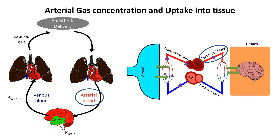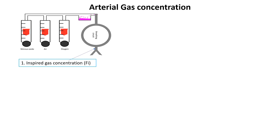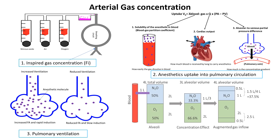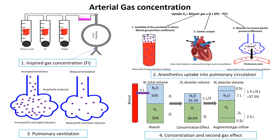In this video we will discuss arterial gas concentration and the uptake of anesthesia by peripheral tissues including the brain. All factors that affect alveolar concentration — like inspired gas concentration, pulmonary uptake, ventilation, and the concentration and second gas effect — also influence arterial concentration, because gas exchange in the lungs determines how much anesthetic enters the blood.